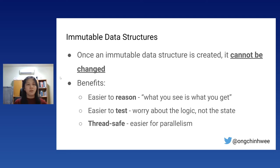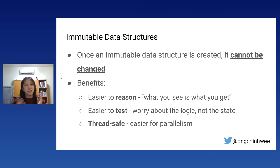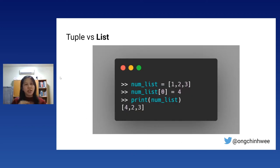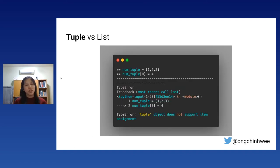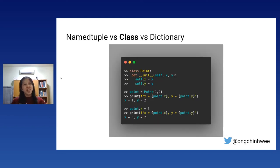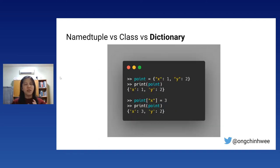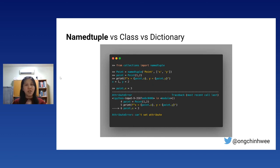For immutable data structures in Python: once created, they cannot be changed. Benefits include being easier to use — what you see is what you get — easier to test since you worry about logic not state, and they ensure thread safety for parallelism. Instead of using mutable lists, use tuples — attempting to modify them raises a TypeError. Instead of a class or dict to define a point, use a NamedTuple — attempting to modify it raises an AttributeError.